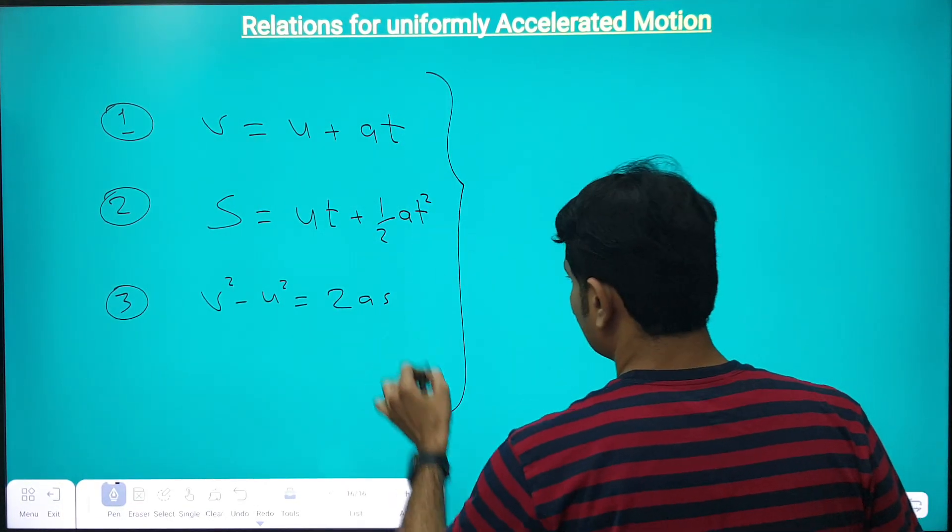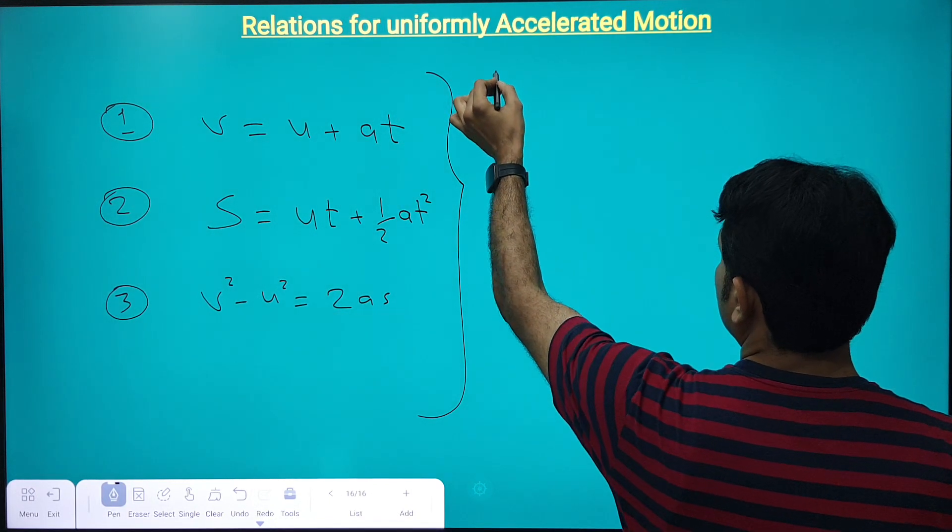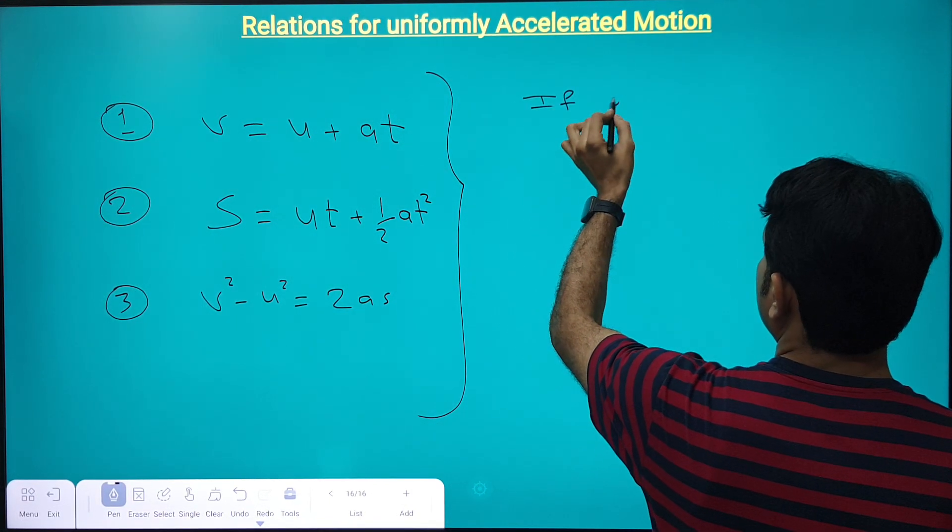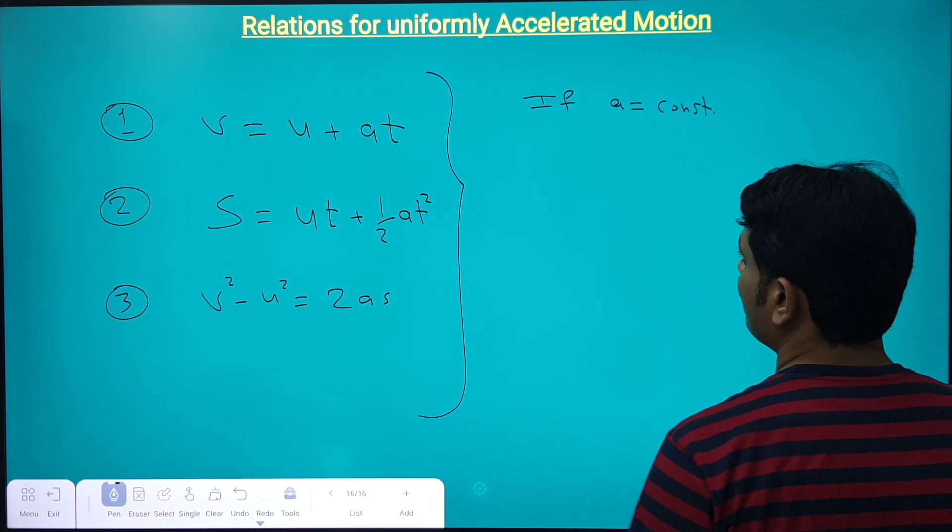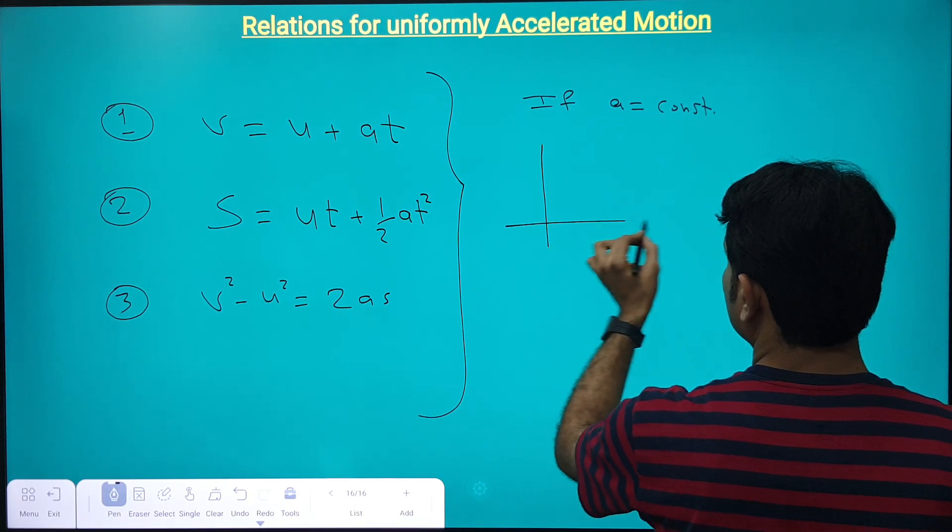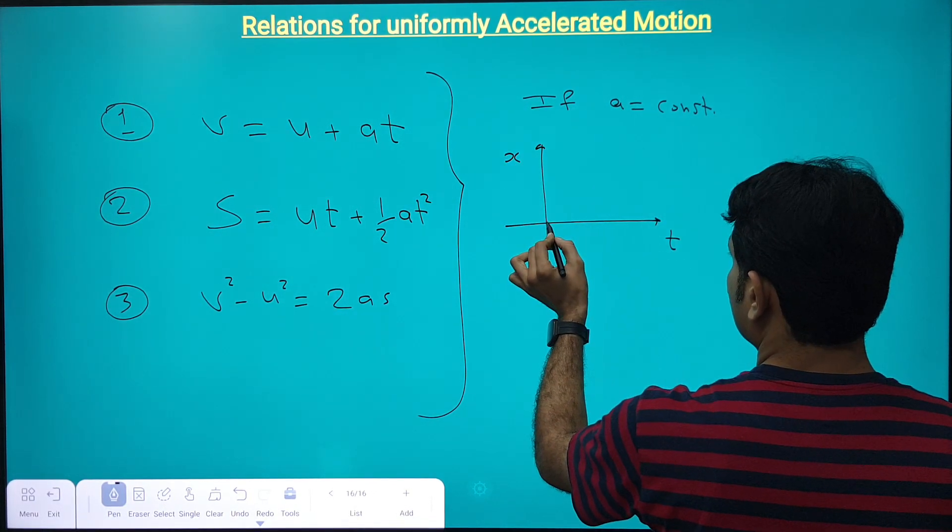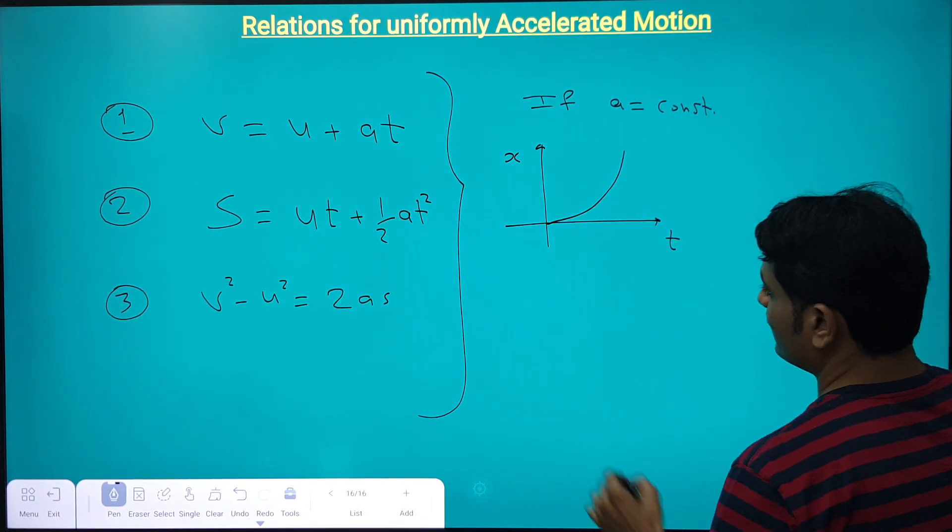Apart from this, we can also say like if acceleration is constant, the graph of X versus T will be like this. This is the graph of X versus T. The graph will be like this. I have drawn a graph for positive acceleration.